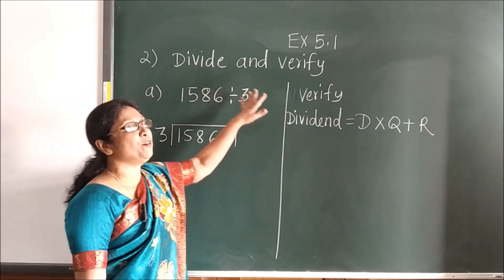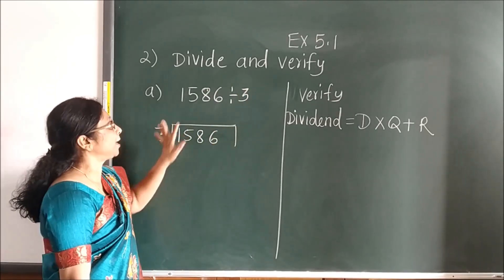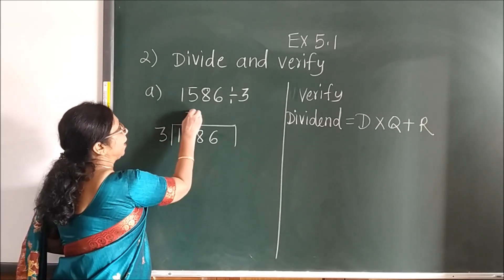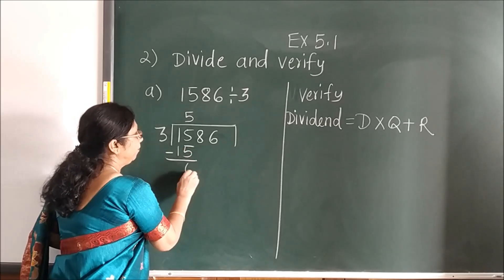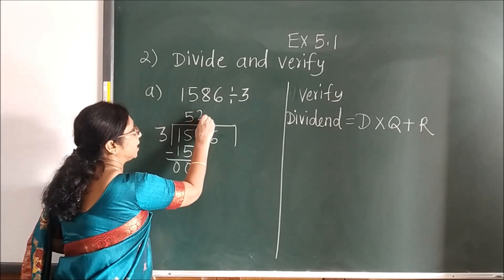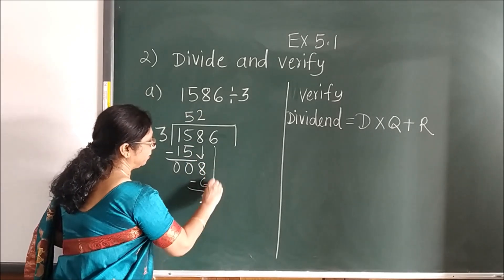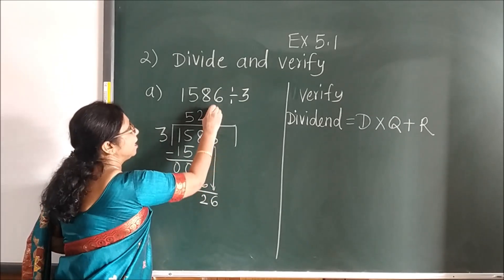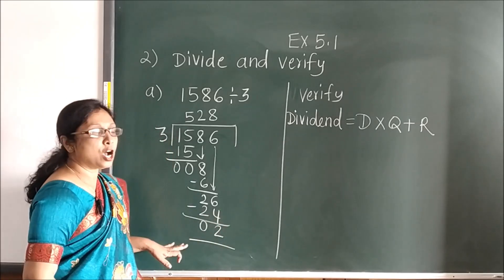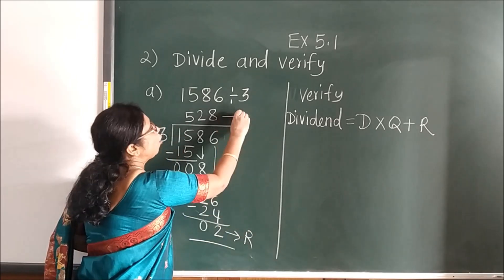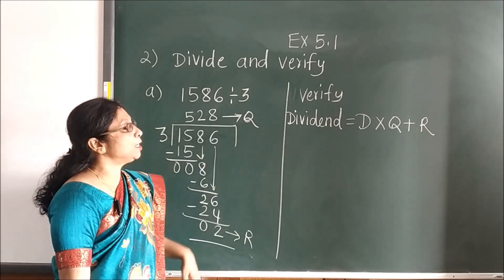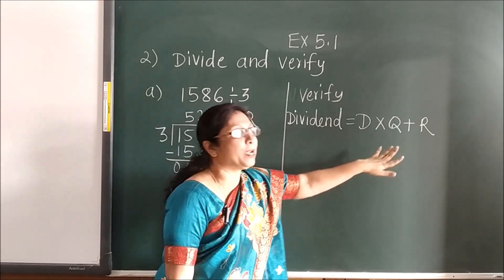Now here, second question: divide and verify. Here you have to verify also after carrying out the division. So simple division first: 3 fives are 15. Bring the next number down; 3 eights are 24. This is your remainder and this is your quotient. Now to verify, children, you will use the formula: dividend is equal to divisor into quotient plus remainder.